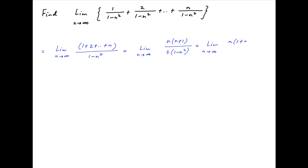This is equal to the limit as n tends to infinity of n times (1 plus n) divided by 2 times (1 minus n) times (1 plus n). The factor (1 plus n) cancels across the numerator and the denominator, and therefore the limit simplifies to the limit as n tends to infinity of n upon 2 times (1 minus n).